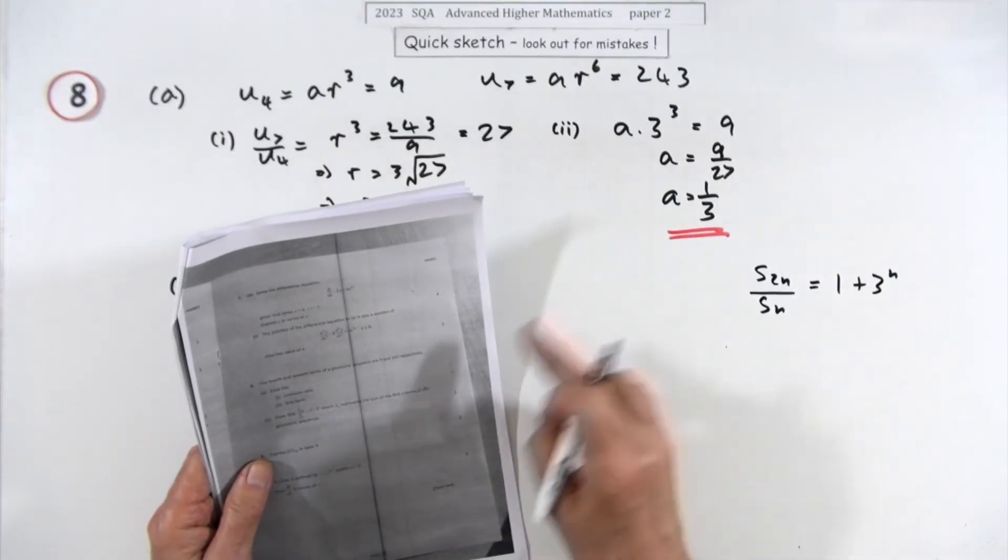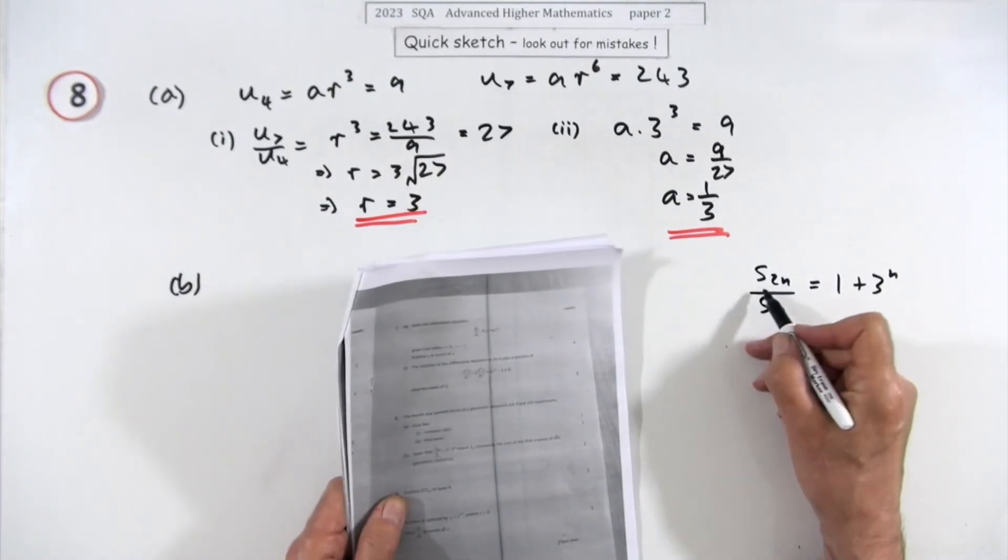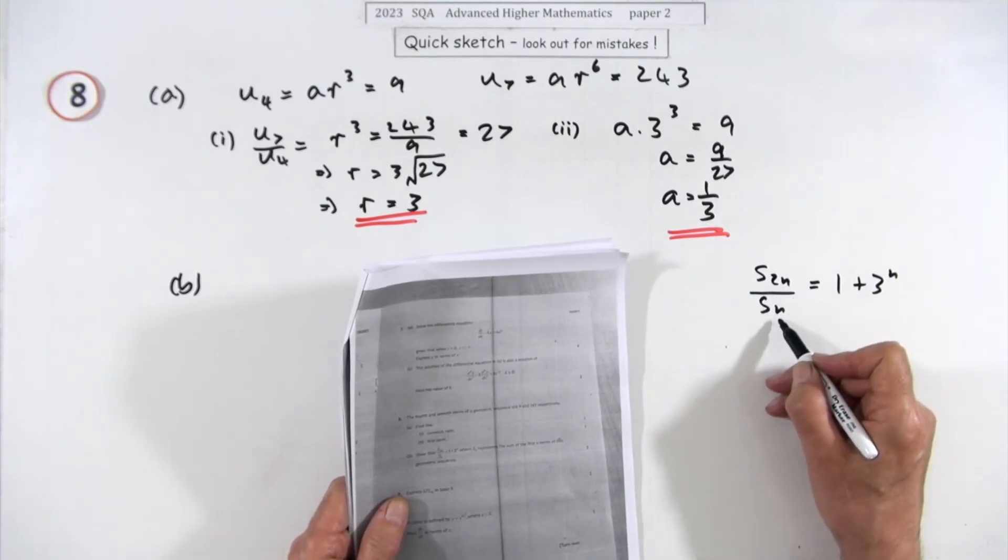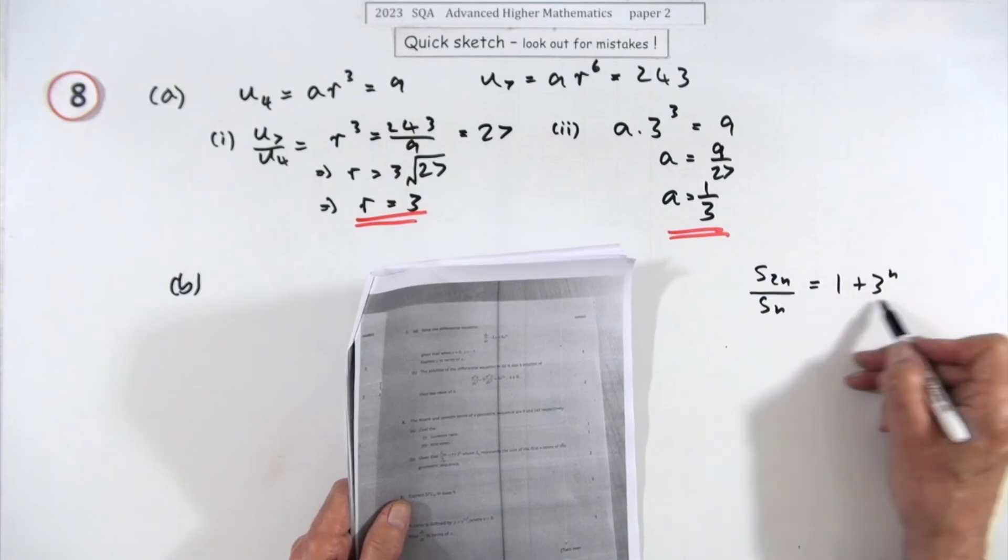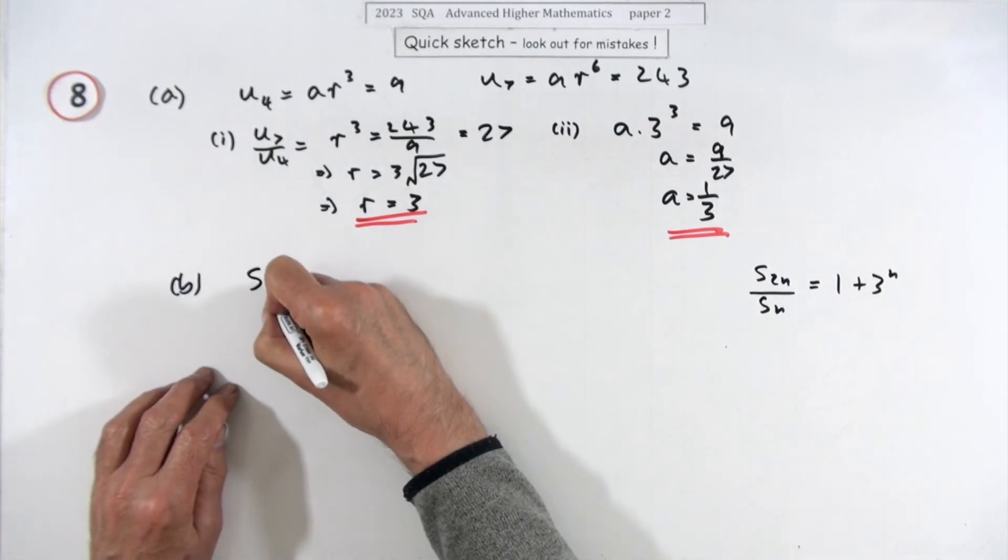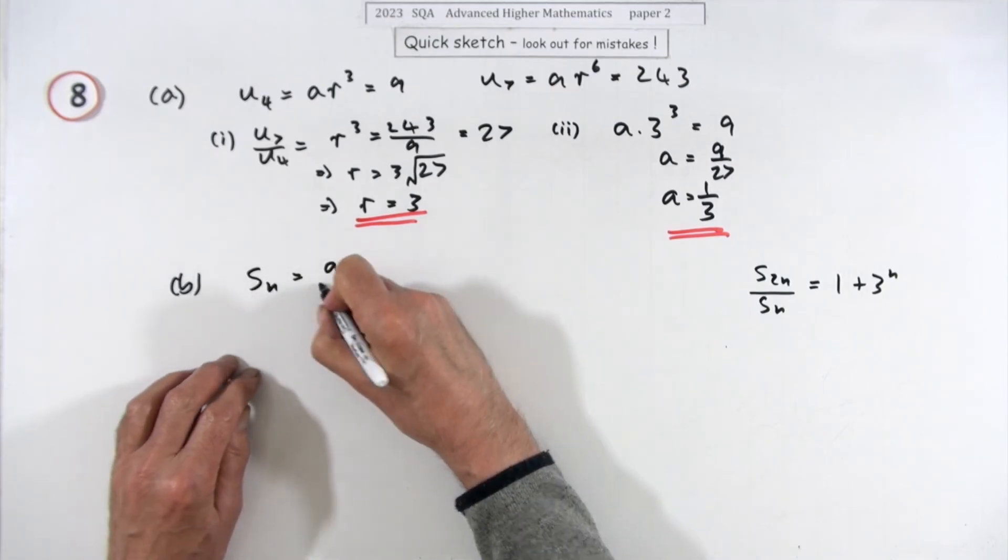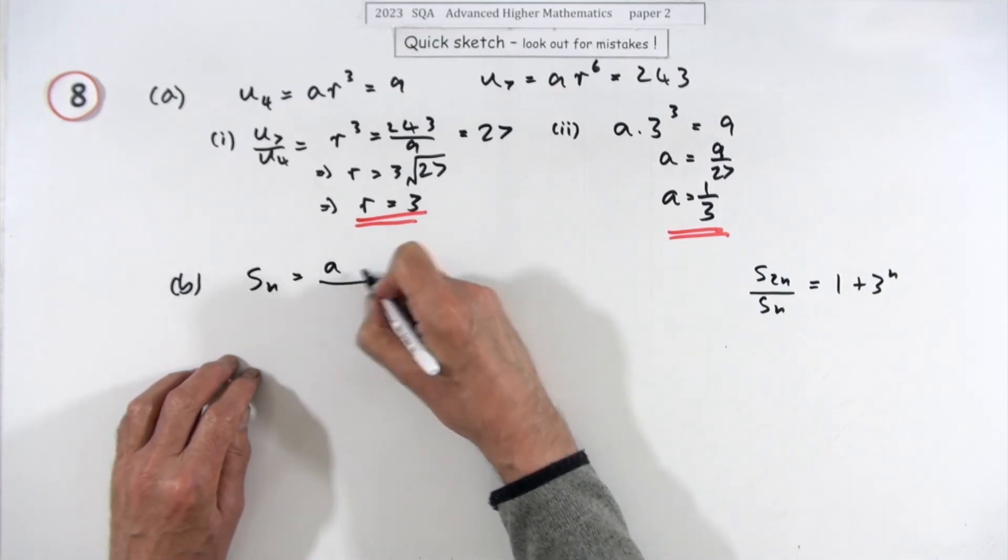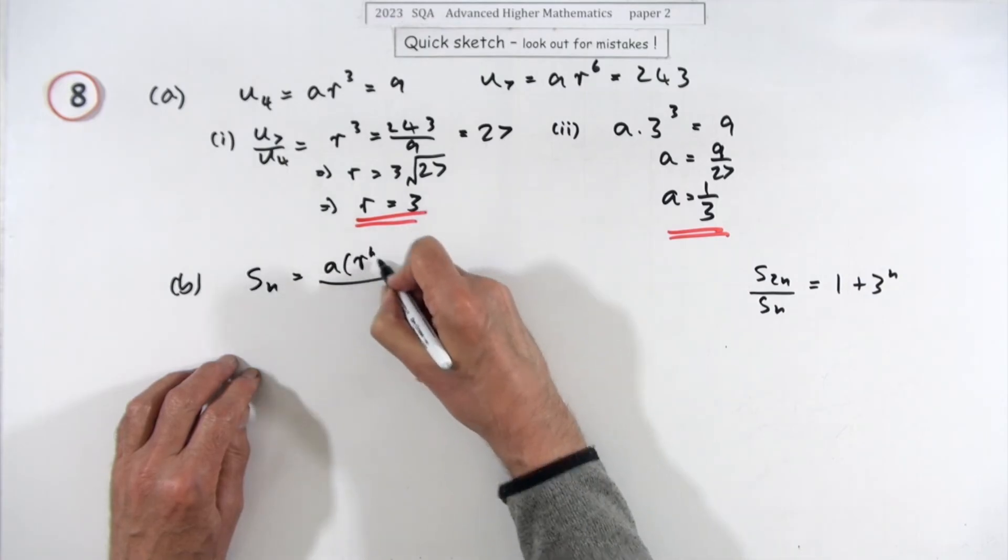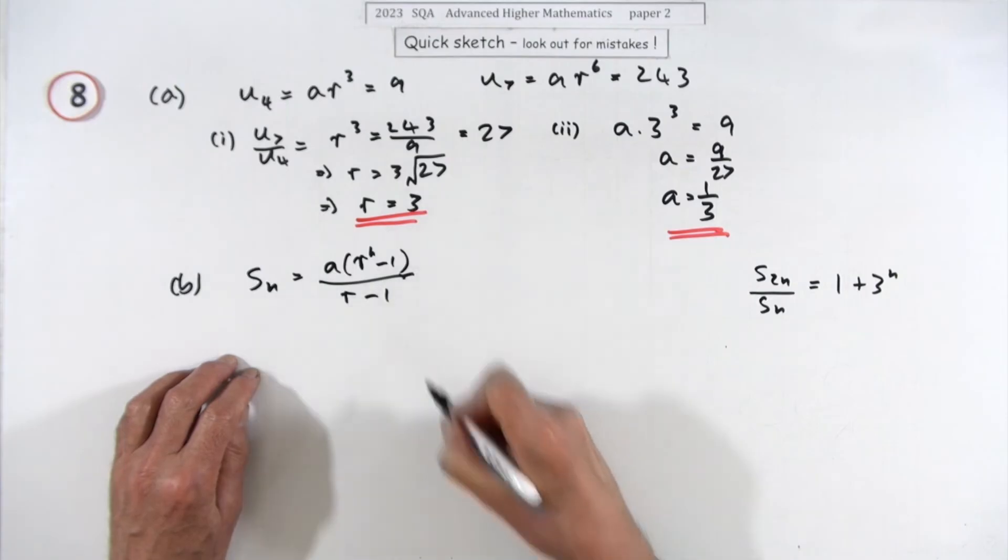Now in part b, what does it say? This is for two marks. Show that s of 2n, the sum of the first 2n terms, divided by the sum of the first n terms, should look like this. Well, the sum of n terms is a times—now, 1 minus r, or—now r is bigger than 1, so I'll go for r to the n minus 1 over r minus 1.